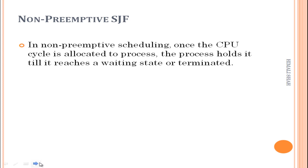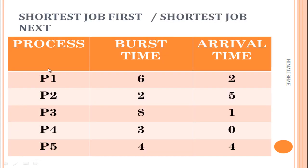Let's look at an example of SJF. In this example we are given the process, burst time, and arrival time. Here five processes are considered: P1, P2, P3, P4, and P5. Arrival time of P1 is 2, P2 is 5, P3 is 1, P4 is 0, and P5 is 4. In this scheduling algorithm we first consider the arrival time.